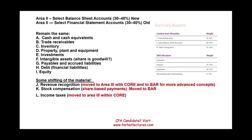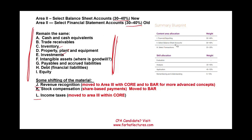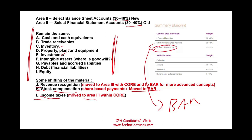Now let's look at the selected balance sheet — area two. It's specifically called selected balance sheet now, focusing on balance sheet accounts. This section remains 30% to 40%, and the topics are the same: cash, receivables, inventory, property, plant and equipment, and investments. Some shifting occurred: revenue was moved from here to selected transactions; stock compensation moved to BAR; and income taxes moved within the core to area three.